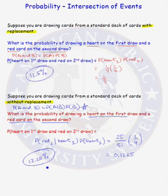If you do not have independent events, you must use the general equation for the probability of the intersection of two events. If the events are independent, you can use the simplified equation P(A∩B) = P(A) × P(B).